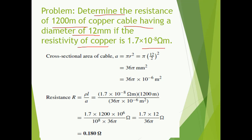First of all, we know the formula R is equal to rho L by A. Rho is given to us, length is also given to us, but area is not available. So first we need to calculate the area. The cross-sectional area of a cable comes out to be pi r squared.